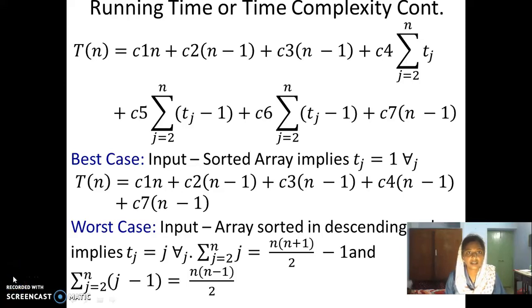You can see that we can combine all the elements which include n and the constants to the other side, and we can write like a n plus some b, where this a and b are some combinations of c's in the cost.